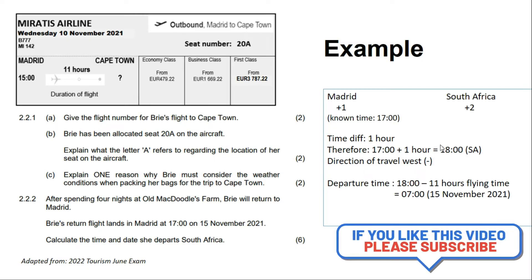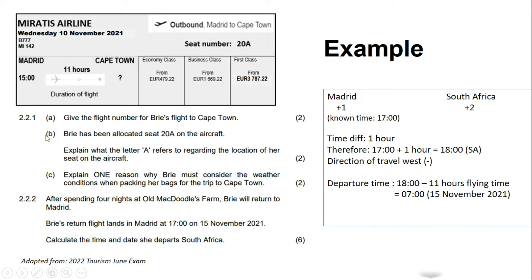This example is from the 2022 Tourism June exam, question 2.2. We are told the return flight lands at 17:00 on the 15th of November 2021 — that is our known time. The question asks us to calculate the time and date that she departs South Africa. Following our steps, we identify the countries: Madrid and Cape Town, South Africa.